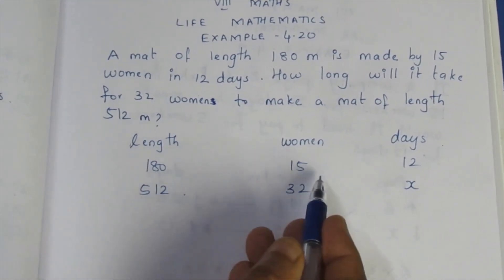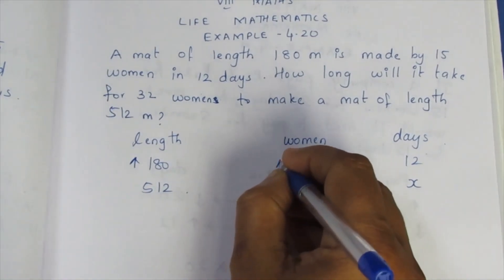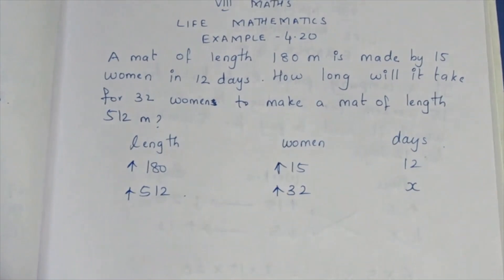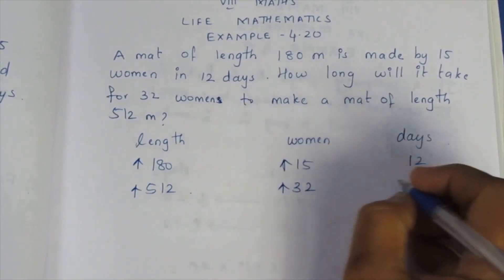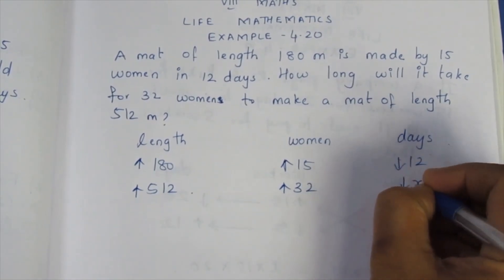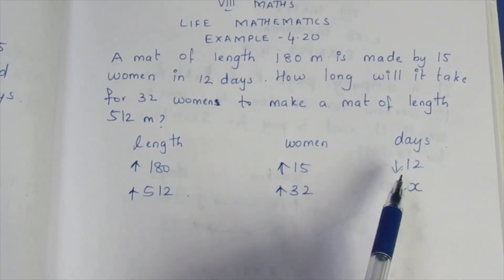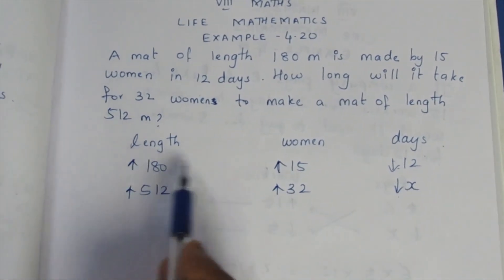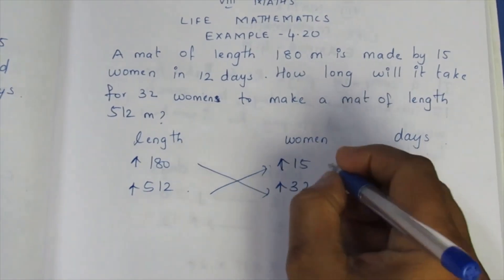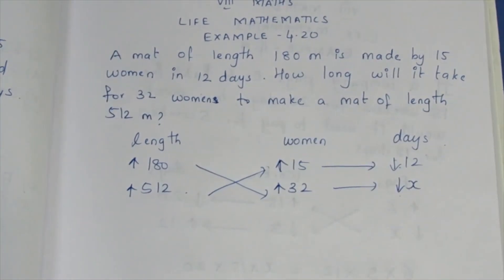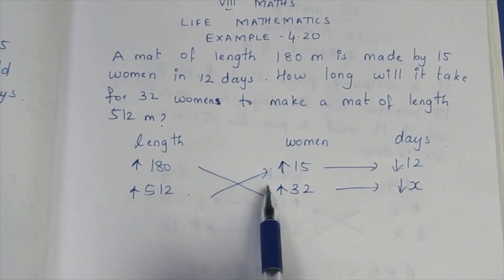As the length increases, the number of days increases. As the number of persons increases, the days will change accordingly. We can multiply using arrow marks — going in the same direction, 1 direction, cross multiply.